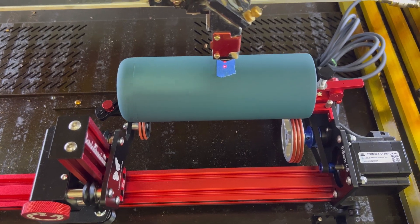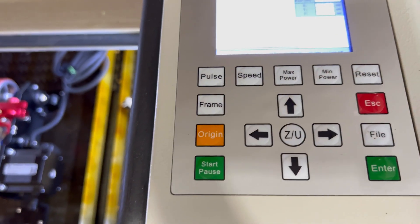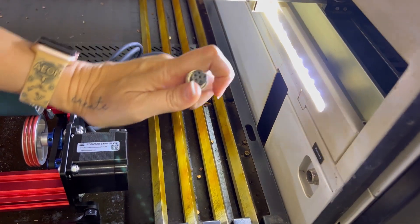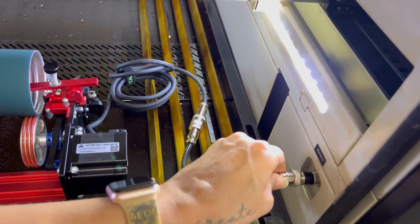Once you have it set then it's time to set the origin by pressing the origin button. Now you can go ahead and plug in your rotary. Line it up, push it in, and tighten the screw.